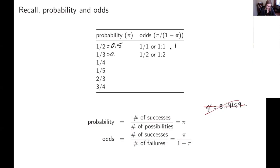1 third, which, you know, we could write it as a decimal if we wanted to. That's going to turn into odds of 1 half or 1 to 2 with the colon in the middle.